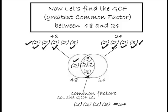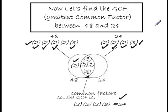Look inside the center intersection of the two circles. We wind up with 2 times 2 times 2 times 3, which is 24. So 24 is the greatest common factor. Just to check it: 24 goes into 48 two times, and 24 goes into 24 once. It should be the largest number that is a factor of both 24 and 48. Greatest common factor.